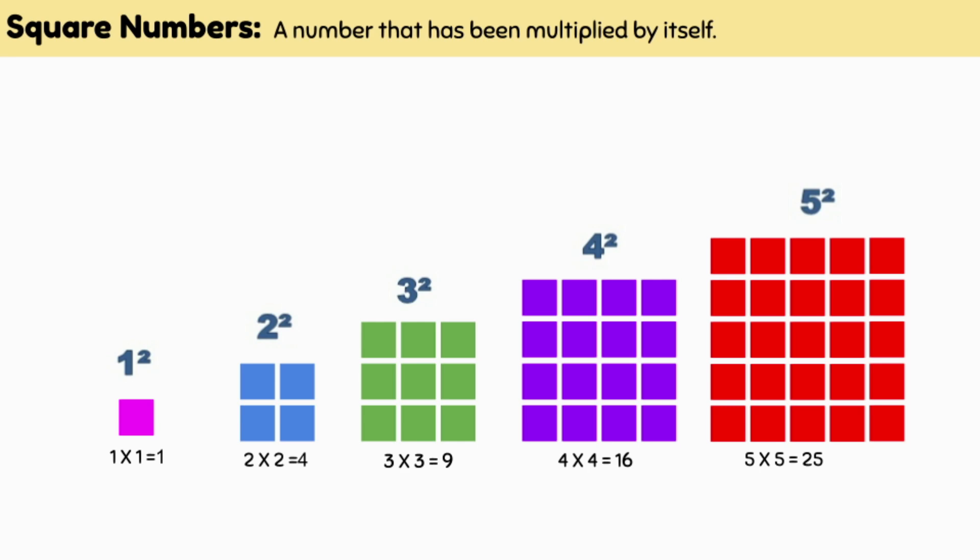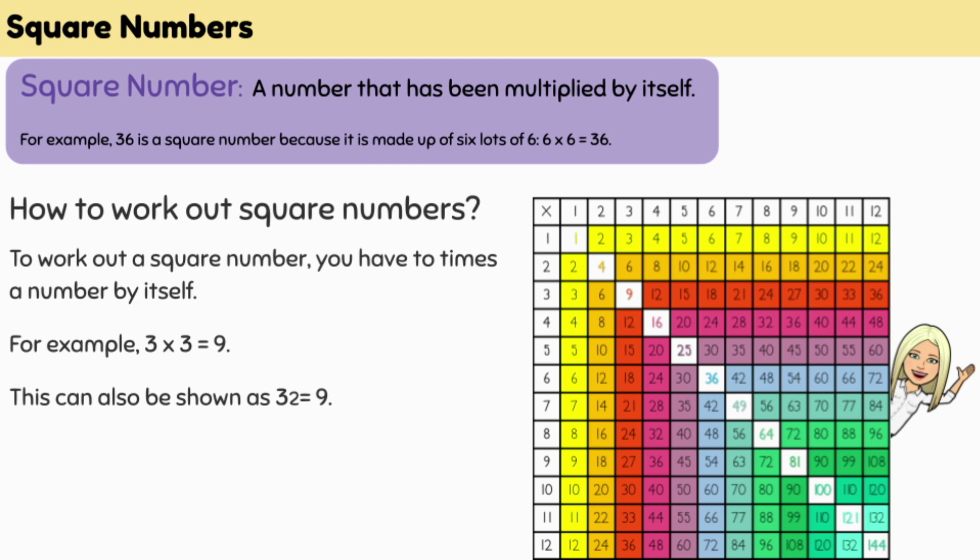A lot of people get really confused by this and think that it means times or multiply by 2. It doesn't. It just means that we times the number by itself, or another way of thinking is that number appears twice in the number multiplication sentence.